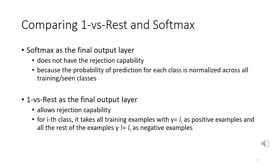The reason we choose one-versus-rest as the output layer instead of softmax is the rejection capability requirement. Softmax does not have rejection capability because the prediction probability for each class is normalized across all known classes. One-versus-rest allows rejection capability: for class i, the one-versus-rest layer takes all training examples with label Li as positive examples and all other examples whose label is not Li as negative examples.